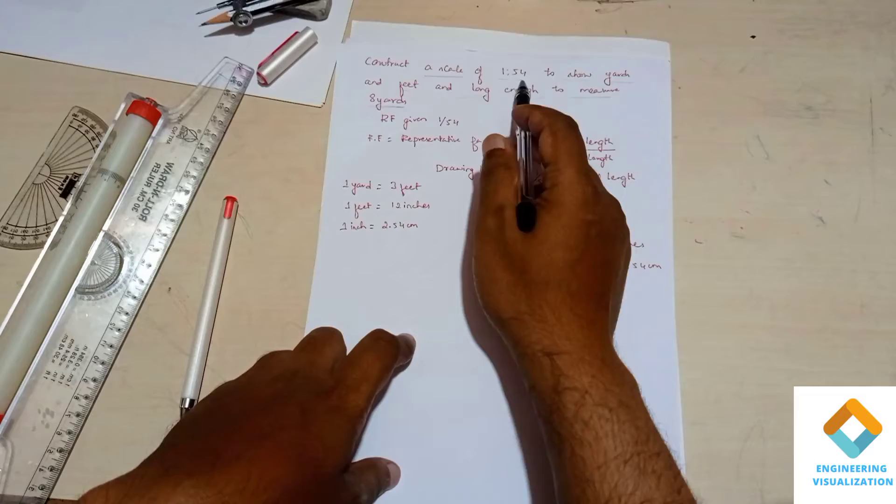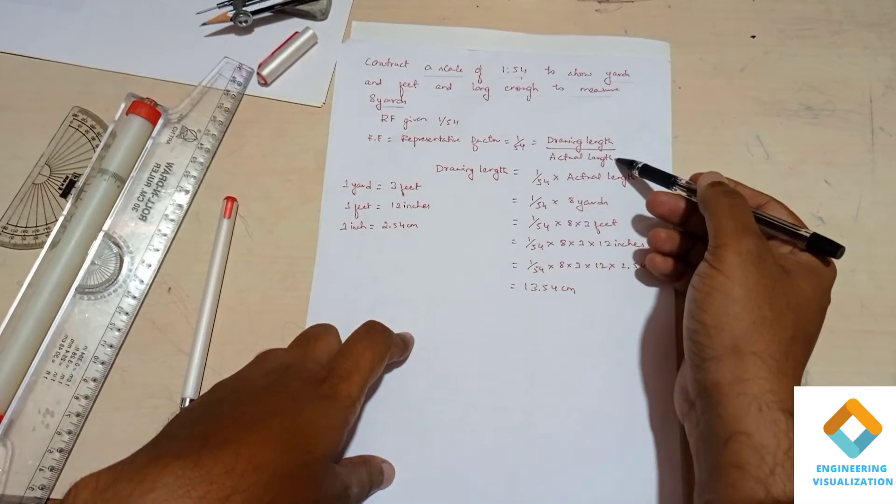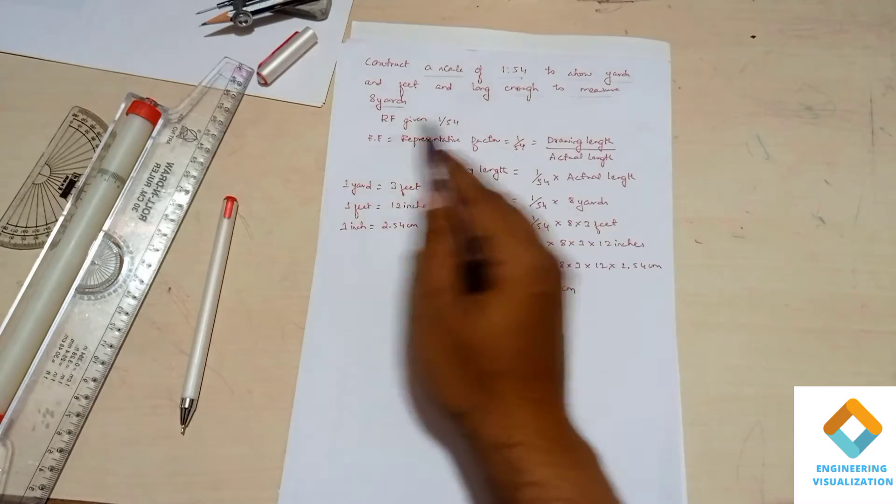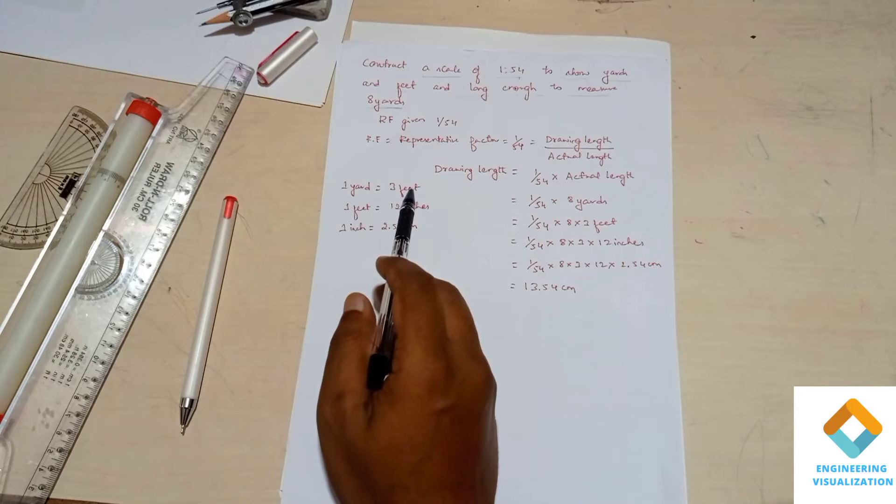In this problem we need to construct a scale where they have given RF, that is Representative Factor, that is 1 by 54. So we know the formula: representative factor is equal to 1 by 54 into drawing length by actual length.